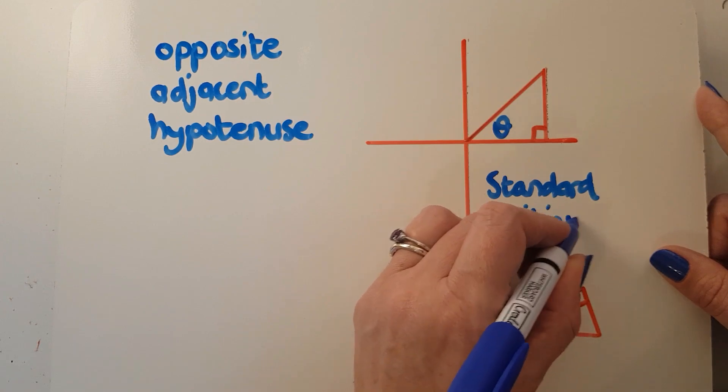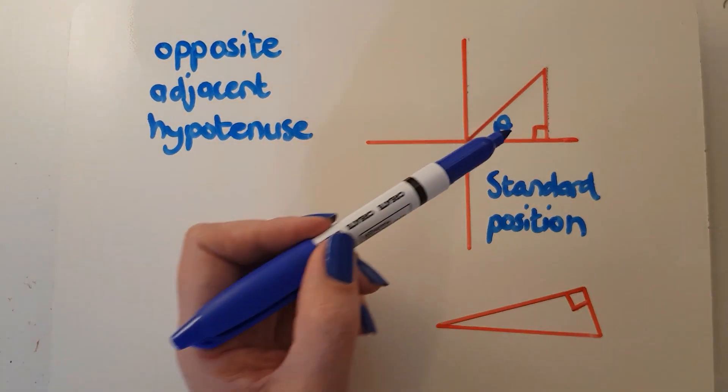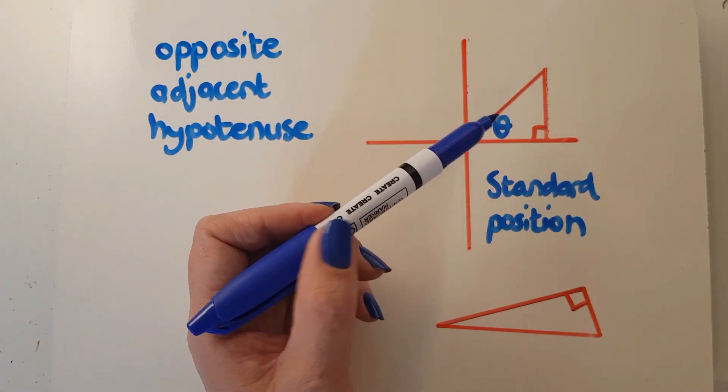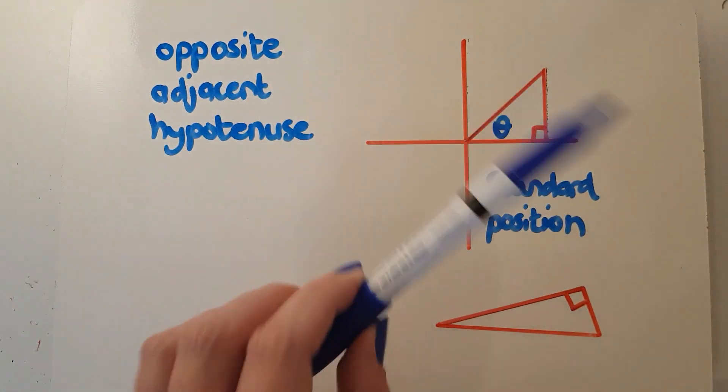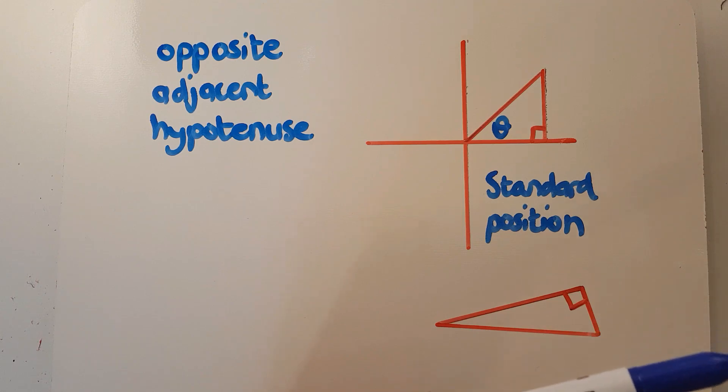If you have the angle drawn in standard position, which means it goes from the zero and up, and in this case an acute angle, which is mostly what we deal with, then that in standard position gives us our x, y, and r.